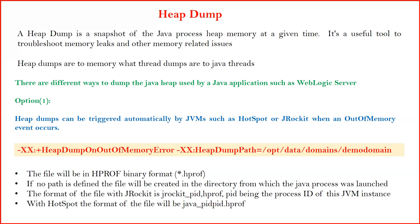There are different ways to take a heap dump for Java-based applications or for the JVM. One option is to enable it by default — whenever you start your admin server or managed servers, you can automatically enable the heap dump so that in case of any out-of-memory problem when your server exits or is force-shut-down, it automatically takes the heap dump. For that, you have the JVM parameters highlighted in red on the screen: -XX:+HeapDumpOnOutOfMemoryError and -XX:HeapDumpPath, where you specify the path to store the heap dump file. This file will be in binary format.